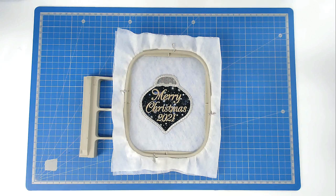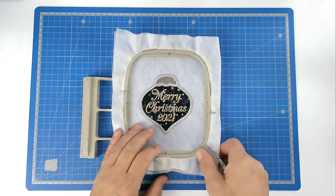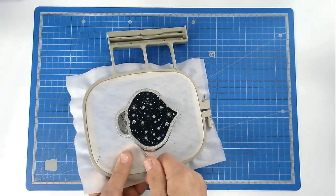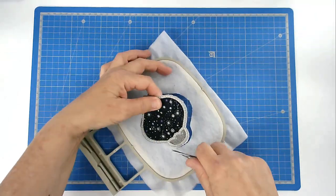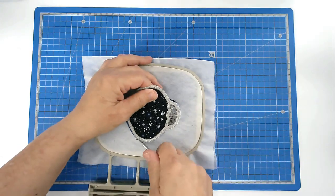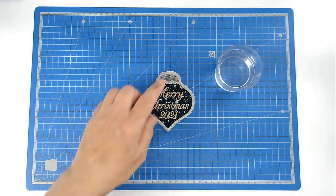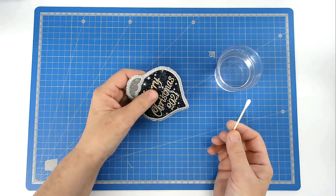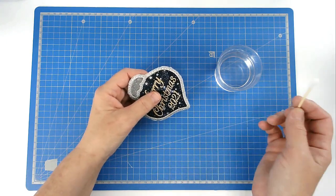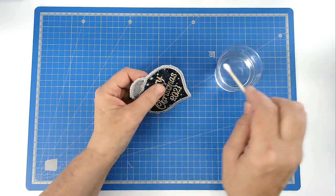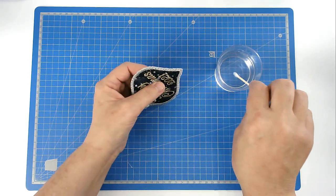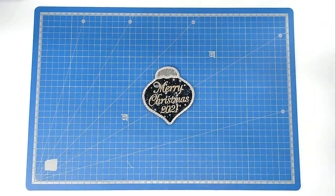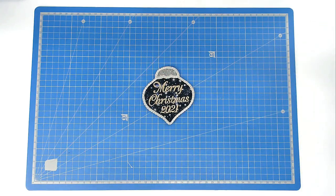Now that the stitching is done, I'm going to free this from the hoop. We're now going to dissolve the excess stabilizer from around the edge. Take a cotton bud and some warm water, dip it in, and just wipe it around the edge. And that's our bauble finished.